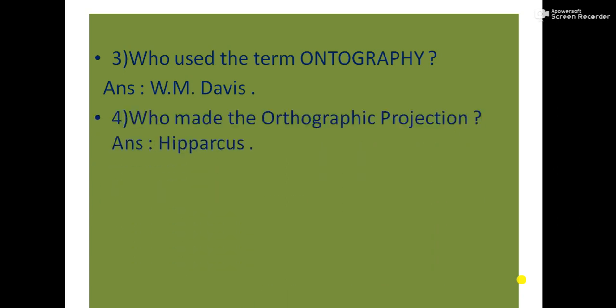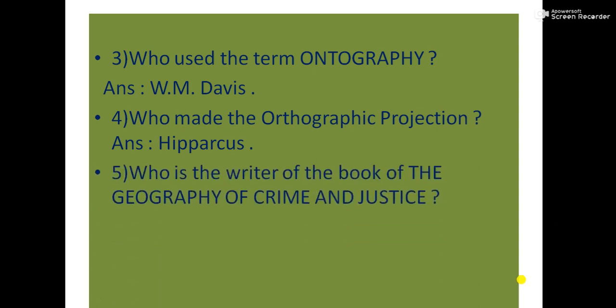The answer is W.M. Davis. Next question is who made the orthographic projection? The answer is Hipparchus. And the next question is who is the writer of the book The Geography of Crime and Justice? The answer is K.D. Harries.